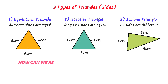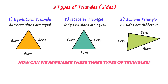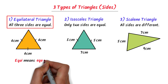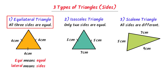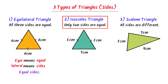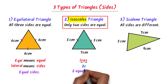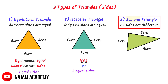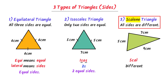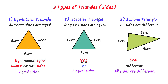Here is one important question: how can we remember these three types of triangles easily? I always teach my personal trick. In case of equilateral triangle, the word 'equi' means equal and 'lateral' means sides, so equilateral means equal sides. In case of isosceles, the first four alphabets have two S's, so two sides are equal. In case of scalene, the first four alphabets are all different with only one S, meaning all sides are different. Using this simple trick, we can easily remember the types of triangles.